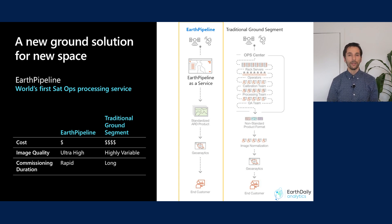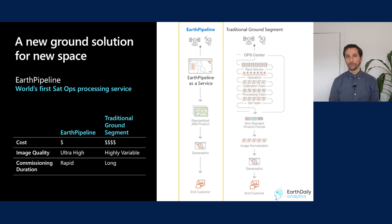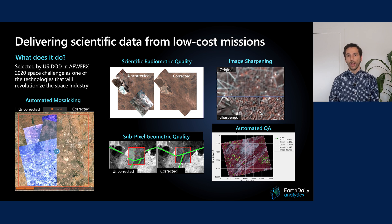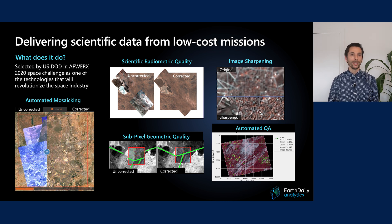The Earth Pipeline also reduces the need for costly operational facilities, software maintenance, and processing calibration and QA operations, which can save satellite owners millions both in upfront costs and in yearly operational expenses. The Earth Pipeline offers rapid commissioning, including sensor characterization and image sharpening, scientific quality radiometric calibration, sub-pixel accuracy geometric processing, accurate automated QA backed by guaranteed SLA, and high-quality mosaicing capabilities.